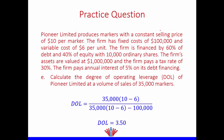To calculate the degree of operating leverage (DOL) at 35,000 units, the formula is: DOL = [Q × (P − VC)] ÷ [Q × (P − VC) − FC]. Substituting: 35,000 × (10 − 6) divided by [35,000 × (10 − 6) − 100,000]. This gives a DOL of 3.5.